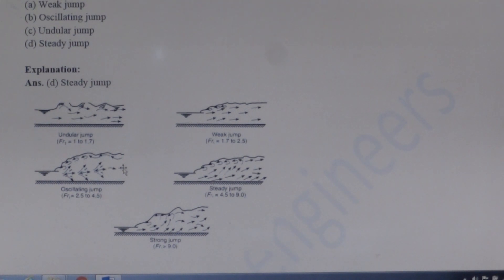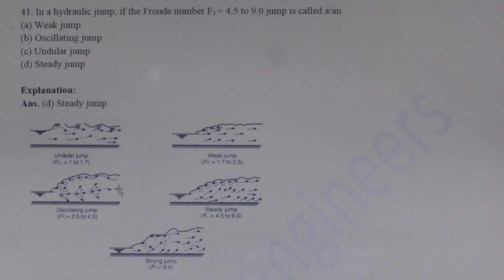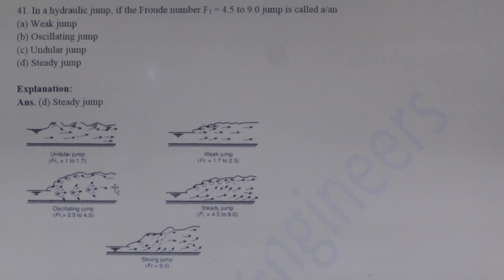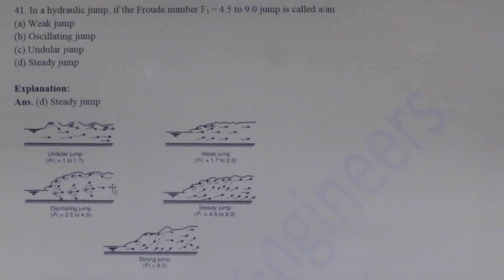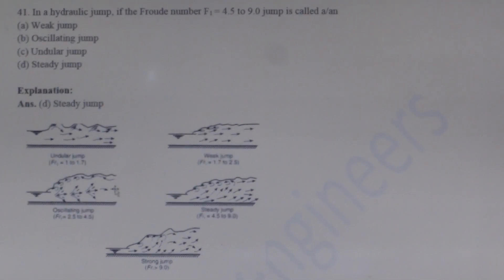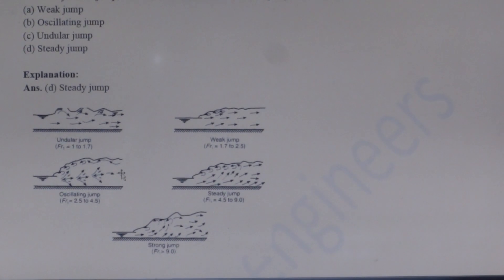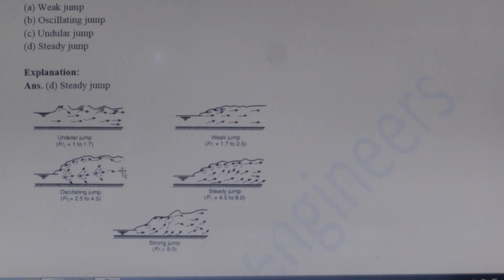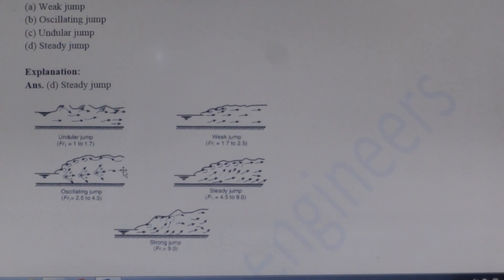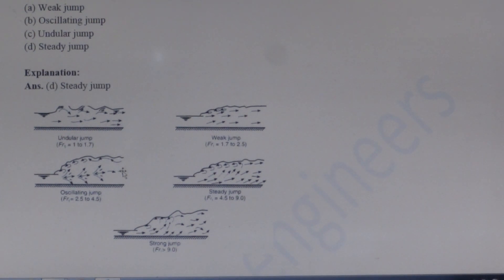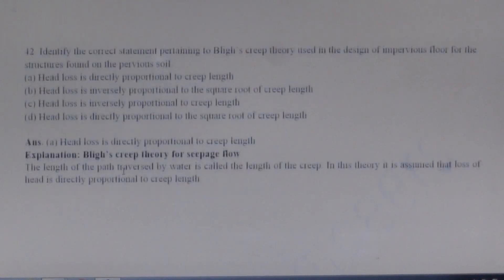Next question: In a hydraulic jump, if the Froude number F1 is between 4.5 to 9, the jump is called a steady jump. When F1 is 1 to 1.7, the jump is an undular jump. F1 of 1.7 to 2.5 gives a weak jump. F1 of 2.5 to 4.5 gives an oscillating jump. F1 of 4.5 to 9 gives a steady jump. When F1 is more than 9, the jump is called a strong jump.